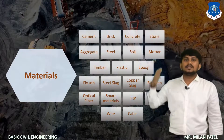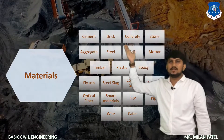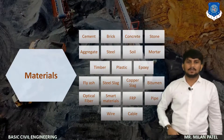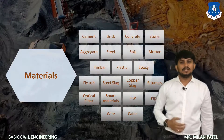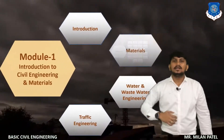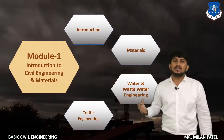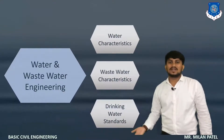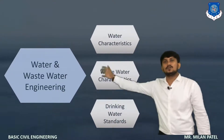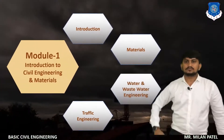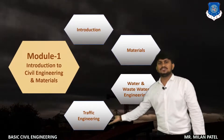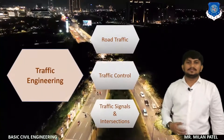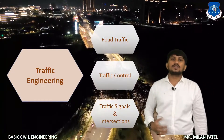Here you see a list of materials like cement, brick, concrete, stone, aggregate, steel, soil, water, etc., which we will discuss in detail later on. We also understand the water and wastewater characteristics in detail, as well as drinking water standards. Lastly, we will look into the concept of traffic engineering, which helps us understand traffic characteristics as well as devices used to control traffic.